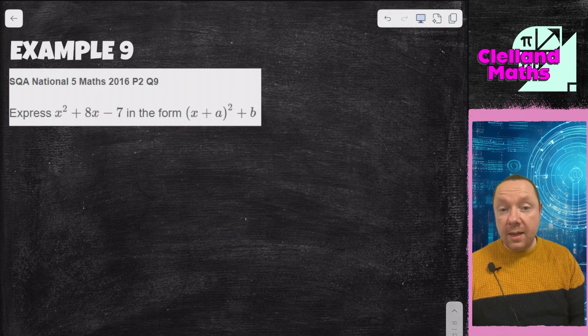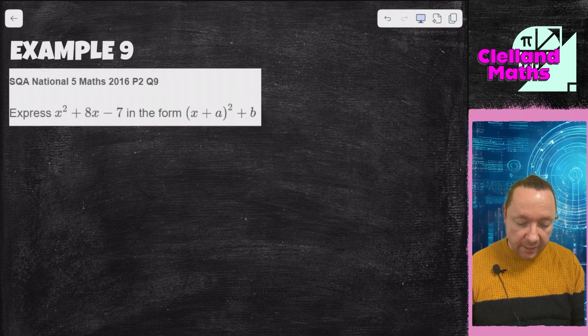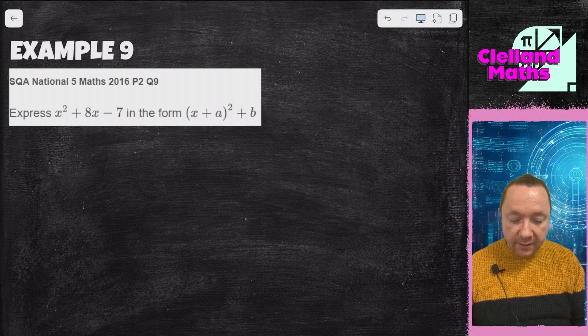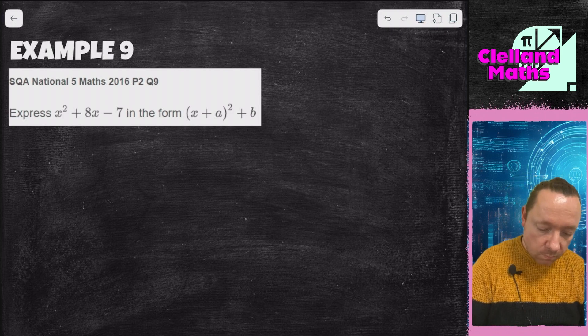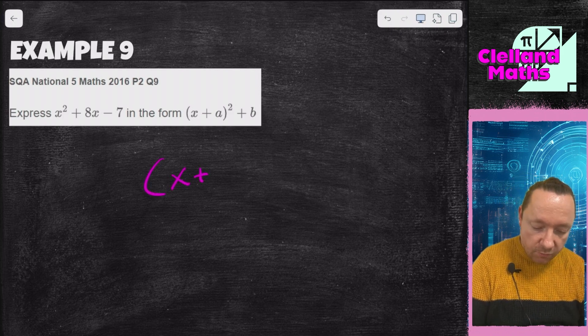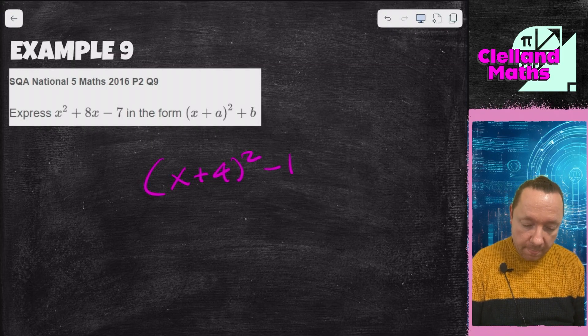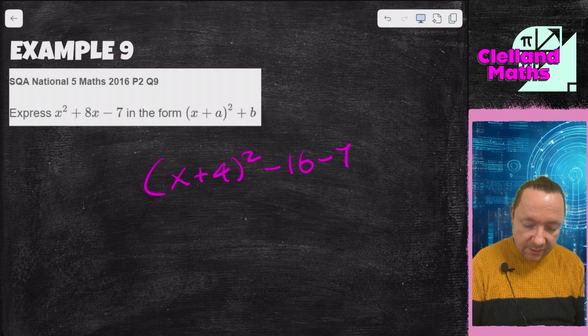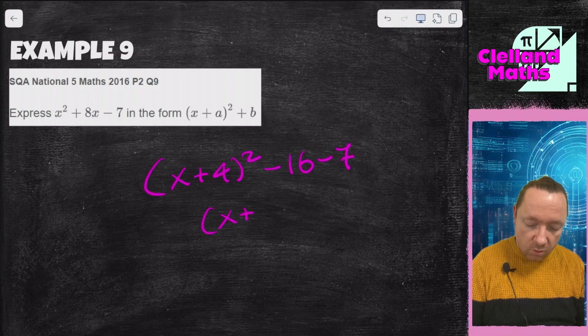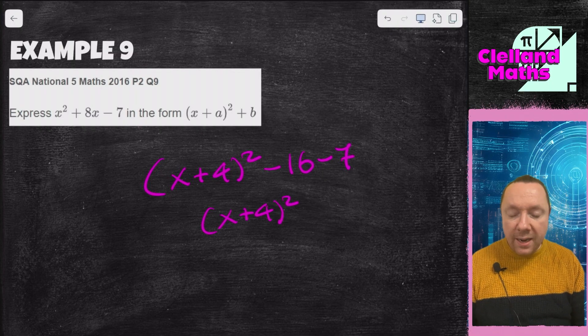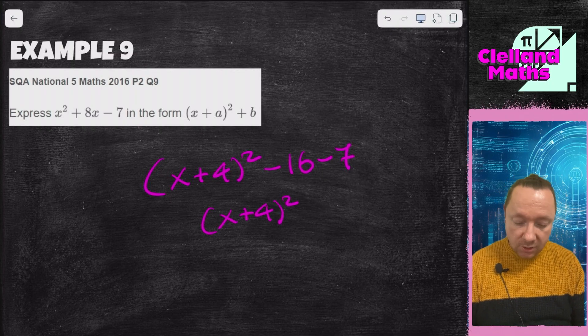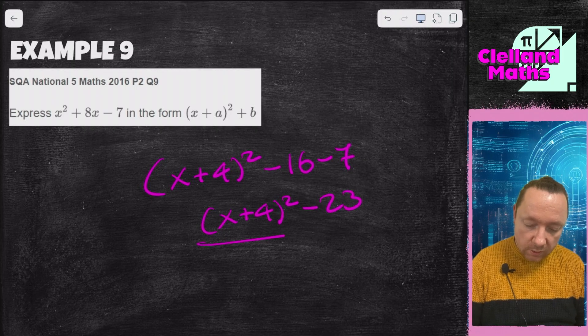Example 9, National Five Maths 2016 paper 2 question 9. Express x squared plus 8x minus 7 in this form. x plus 4 all squared, 4 times 4 is 16 so I'll take it away, and then I've still got to take away 7. x plus 4 all squared, minus 16 take away 7 is minus 23. So we're done there.